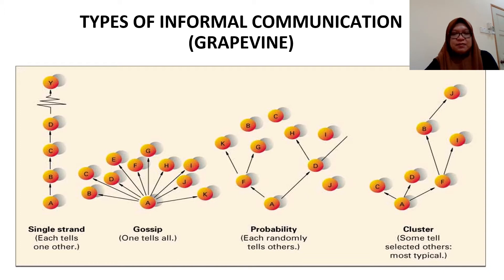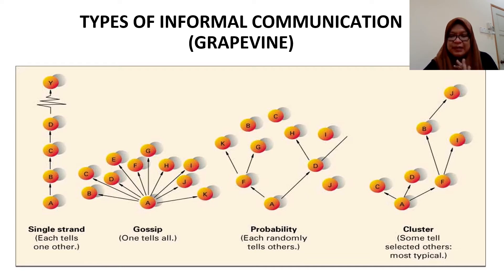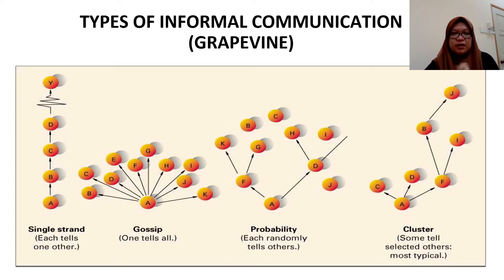There are four types of informal communication. Informal communication is also known as the grapevine. The four types of grapevine are: single strand, gossip, probability, and cluster. Here are the diagrams for each type of grapevine.